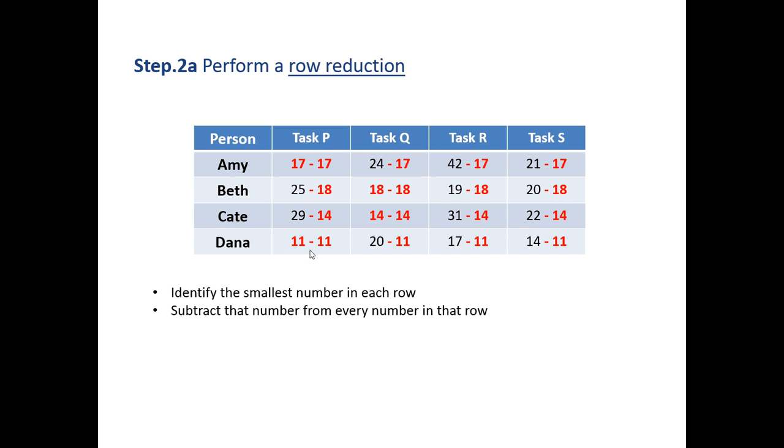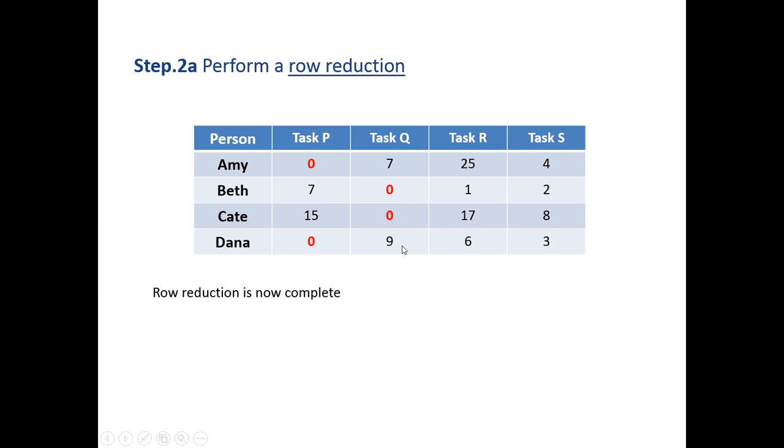So we subtract the smallest number in each row from every element in that row. So 17 take 17, 24 take 17, 42 take 17, 21 take 17, and for Beth we're subtracting 18 from every element, Kate subtracting 14 as it was the lowest row number, and Dana subtracting 11. And that clearly introduces zeros in each one of those rows because we've subtracted the smallest number from each row.